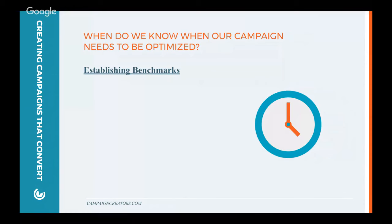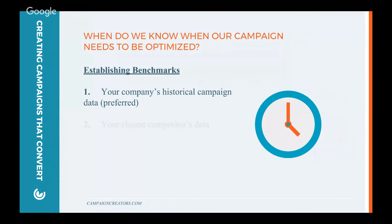There are a few different ways to establish benchmarks. The first and most preferred way is through your company's historical campaign data — what better to compare your company to than your own company? If you have historical data related to your emails and landing pages, that really is the best option. As another option, you can look at your closest competitor's data. There are a lot of tools out there, like SpyFu, that allow you to gather data based on your competitor's SEO activities or pay-per-click activities.